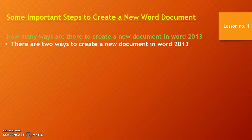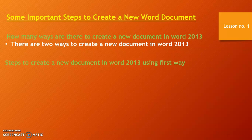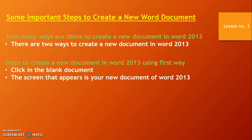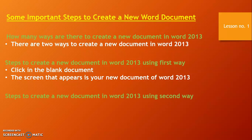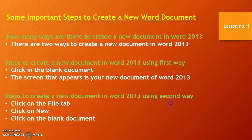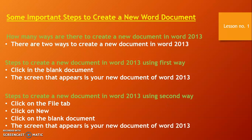There are two ways to create a new document in Word 2013. First way: click on the blank document — the screen that appears is your new document. Second way: click on the file tab, click on New, click on blank document — the screen that appears is your new document of Word 2013.